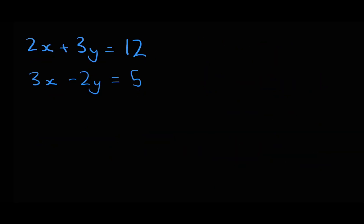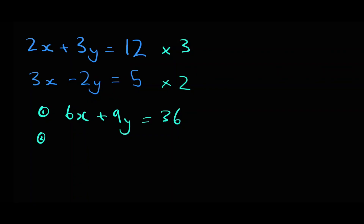You can still use the elimination method even if you don't have two terms that obviously eliminate each other like the 3y and negative 3y from before. You just have to manipulate the equations using division or multiplication. Say we want to eliminate the x and solve for y — if we multiply the first equation by 3 and the second equation by 2, we get equation 1 as 6x plus 9y equals 36 and equation 2 becomes 6x minus 4y equals 10.